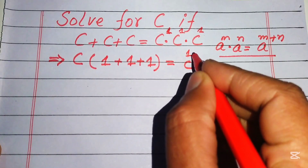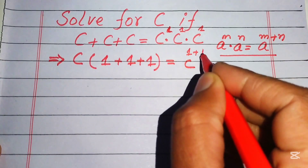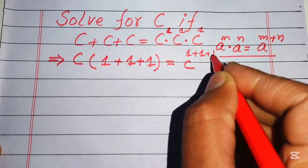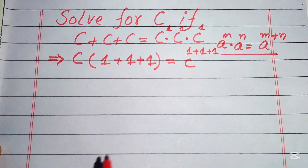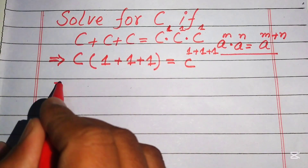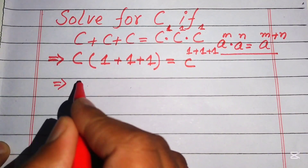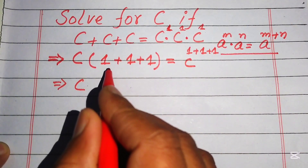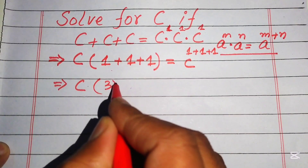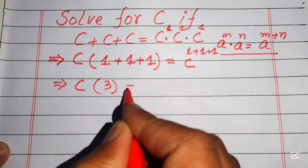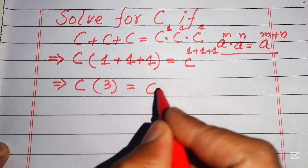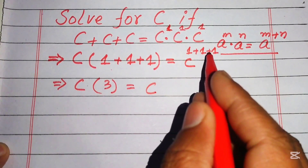The right-hand side becomes c to the power of one plus one plus one. One plus one plus one equals three on the left-hand side, and c to the power of one plus one plus one also equals three on the right-hand side.